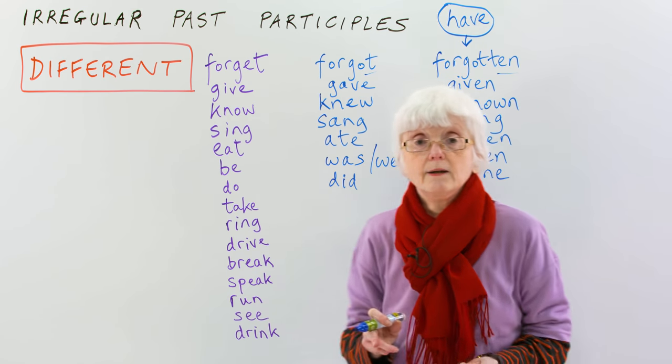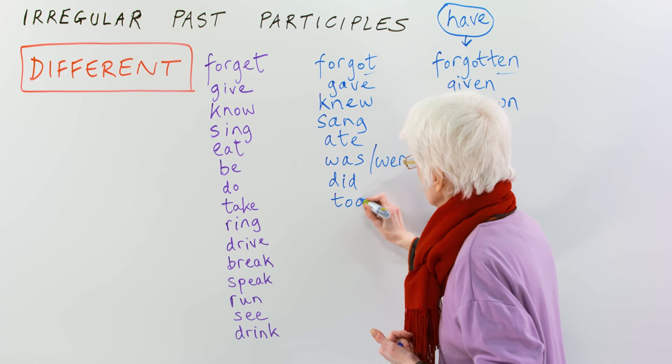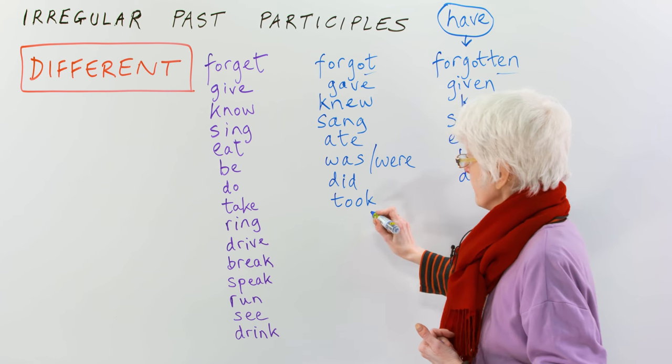To take: today I take, yesterday I took, and I have taken — back to 'take' again with '-en' added. Take, took, taken. To ring: today I ring, yesterday I rang my friend, and I have rung. Ring, rang, rung.